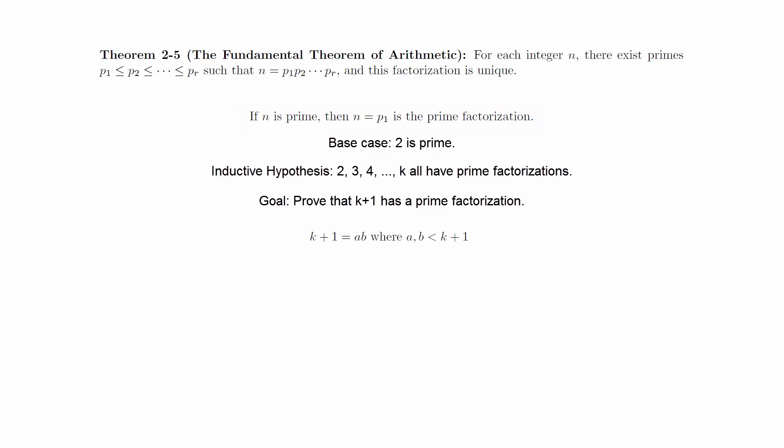If it is not prime, then we can write k plus 1 as a product of two integers that are both less than k plus 1. But by the inductive hypothesis, we know that each of these integers has a prime factorization. This means we can substitute to write k plus 1 as a product of primes. The last step for getting a prime factorization as stated in the theorem is just rearranging the terms to be in increasing order.